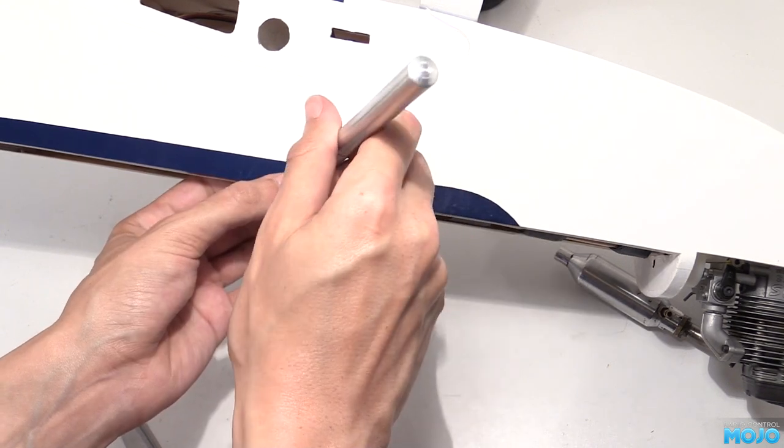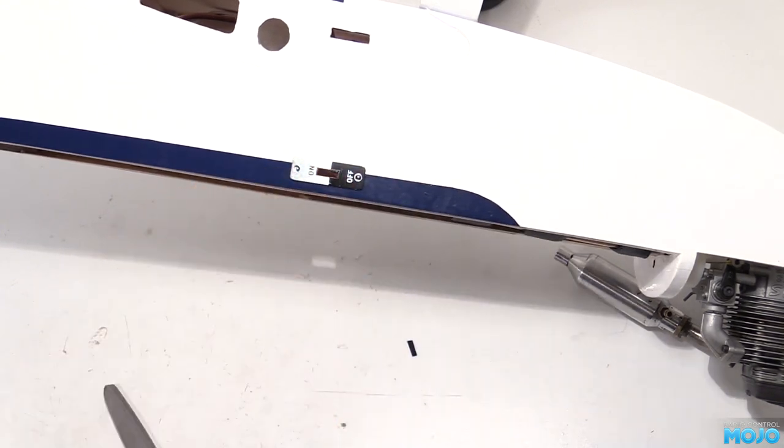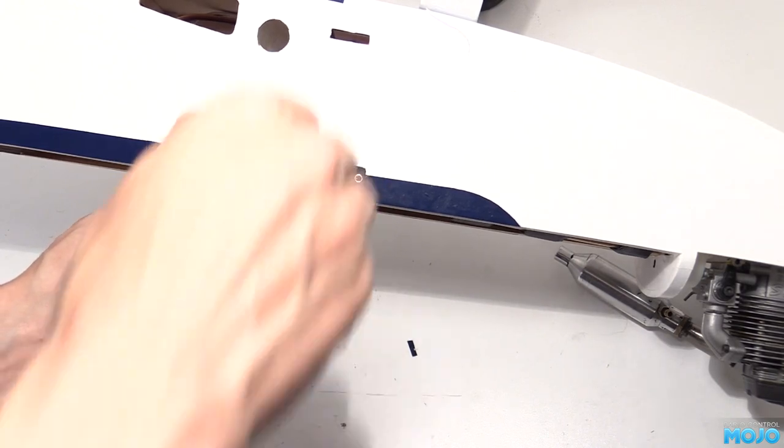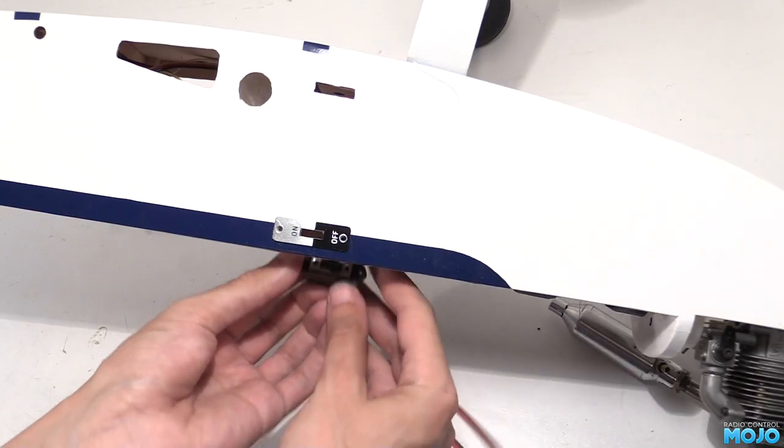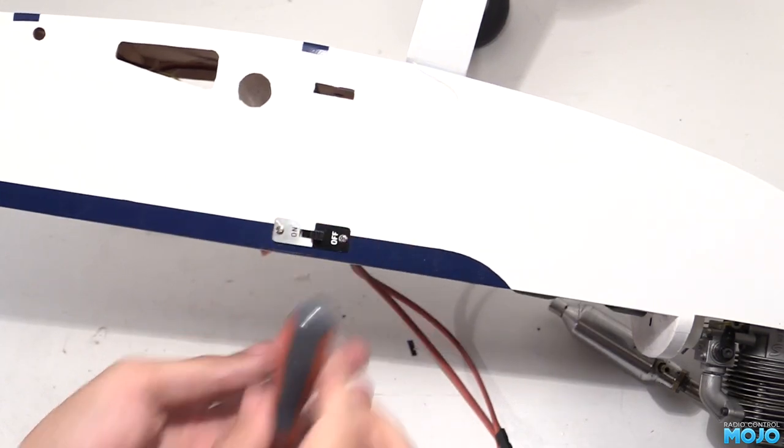Continue to cut out the holes. It's just balsa so it cuts really easily. Drill the screw holes through, offer the switch up to the back and pop in the screws. A really simple thing to install.